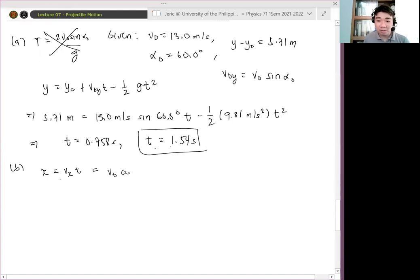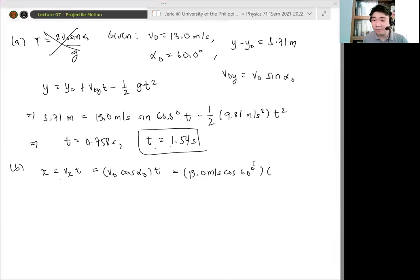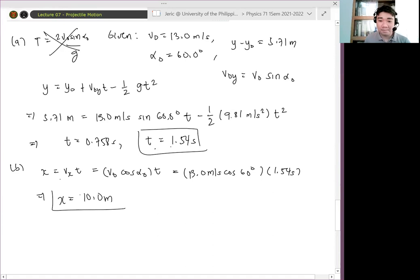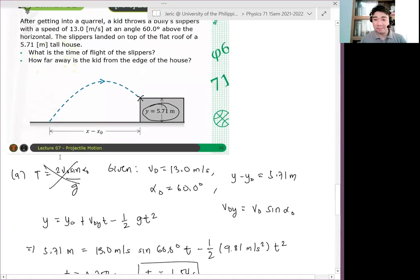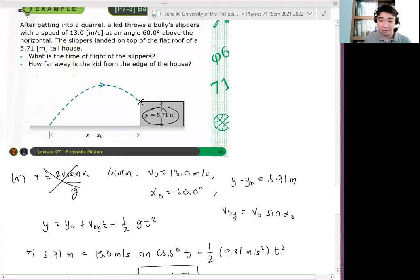And therefore, this is simply v naught cosine alpha naught times time. And therefore, we have 13.0 meters per second, cosine 60 degrees, multiplied by time t, which is 1.54 seconds. And when we solve that, we get x equals 10.0 meters. That's our final answer. Okay? So, yung distance niya, based on the diagram, 10 meters to. Yung distance niya. Okay?